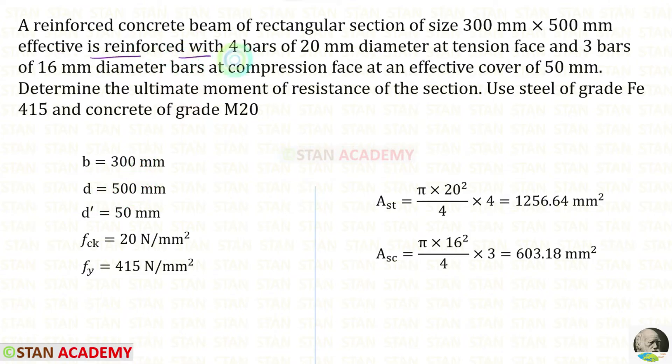Is reinforced with 4 bars of 20 millimeter diameter at tension. Using that data we can find the AST and 3 bars of 16 millimeter diameter at compression. Using that data we can find the area of the steel in compression at an effective cover of 50 millimeter. D prime is 50.